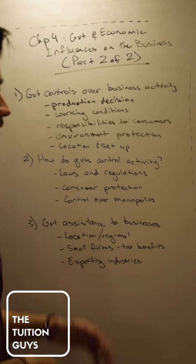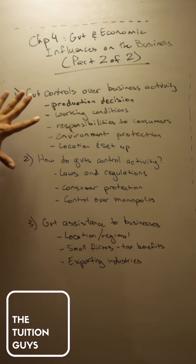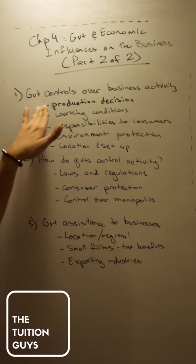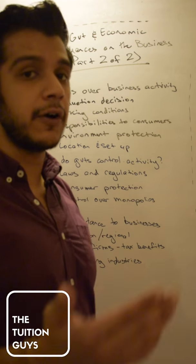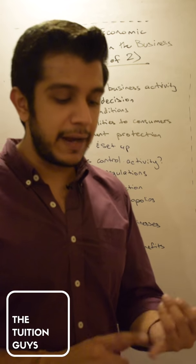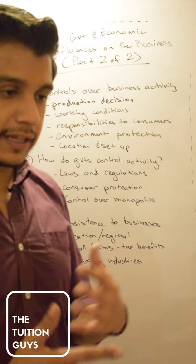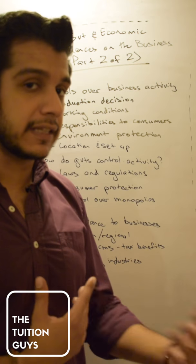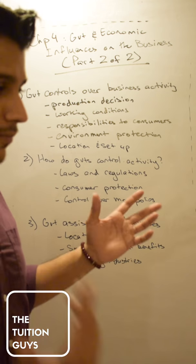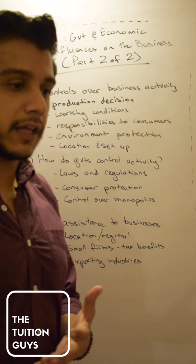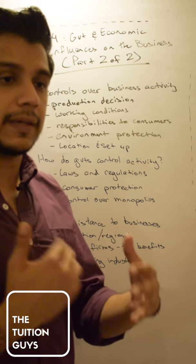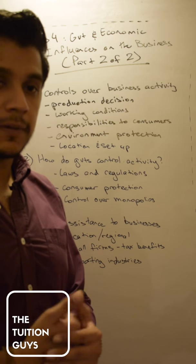So the government basically controls business activities based on these factors. They might control the production decision. They might influence on what or how to make something. We spoke about planned economies, market economies and mixed economies, right? So we saw that allocation of resources might just be in the hands of the government. But in this setting, we're not talking about that we're in a planned economy, we're talking about being in a market economy or mixed economy.